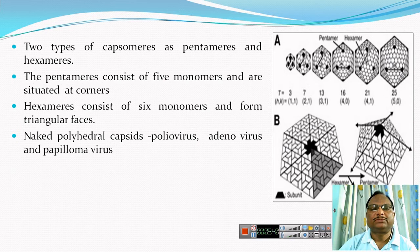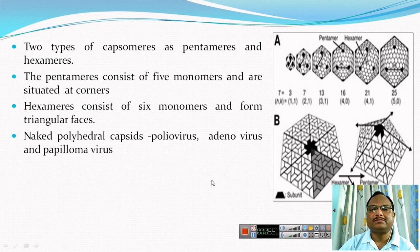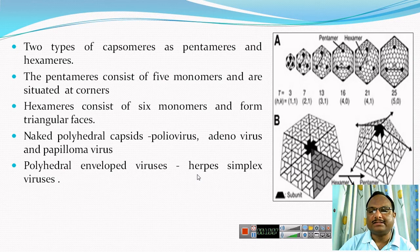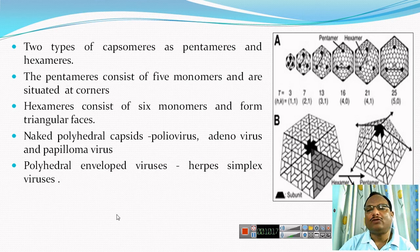Such polyhedral capsids can be either naked or enveloped. Examples of naked polyhedral capsids include poliovirus, adenovirus, and papillomavirus. Examples of polyhedral enveloped viruses are herpes simplex virus and HIV virus. In polyhedral enveloped viruses, the capsid is surrounded by an additional membrane — the envelope — whereas in naked polyhedral capsids, the capsid is not surrounded by any kind of membrane.